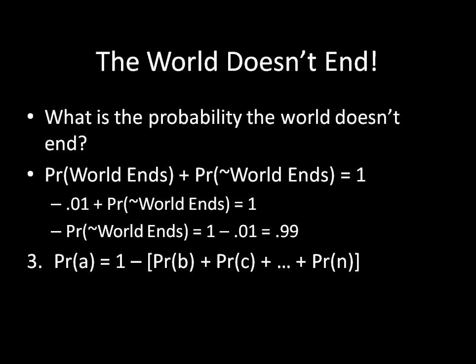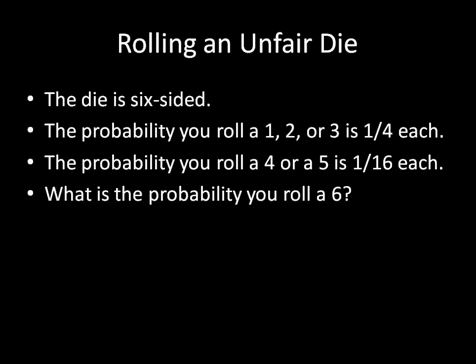So let's try an example with this just to make sure it's a bit more clear. Say I gave you an unfair six-sided die. The probability you roll a 1, 2, or 3 is 25%, it's one-fourth a piece. And the probability that you roll a 4 or 5 is one-sixteenth a piece. I'm asking you, what is the probability you roll a 6? Well, we don't know the probability you roll a 6, but we know the probability of everything else happening, so we should be able to solve for that.